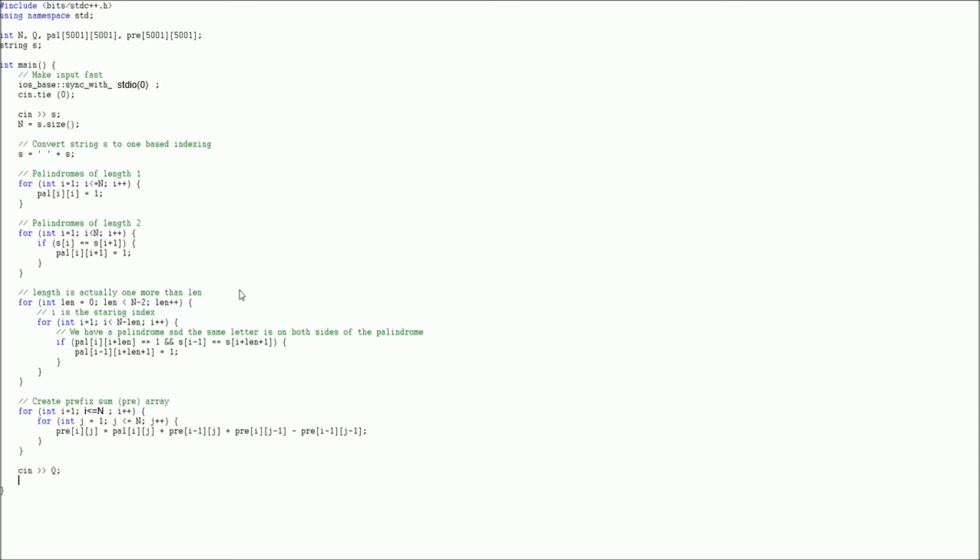So you first read in the number of queries, and then for each query, we get two numbers, a and b. a and b are already in one-based indexing, so we do not have to convert them. Now we need to output these queries using fast output, because we don't want to get time limit exceeded for slow output. Because of this, we use printf. We are going to print the output to our query, which is pre of b,b minus pre of a minus 1,b minus pre of b,a minus 1 plus the region we subtracted twice, which is pre of a minus 1,a minus 1. We have now answered all our queries and solved the problem.